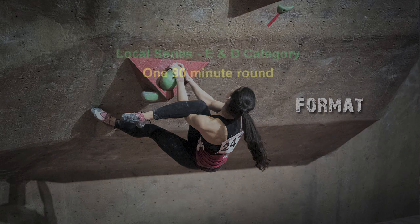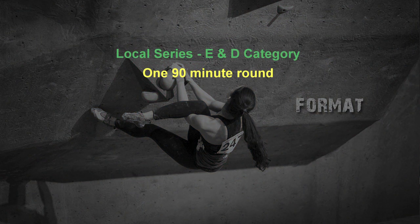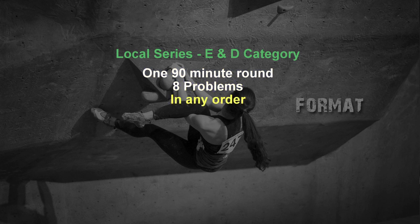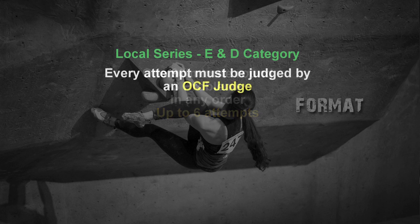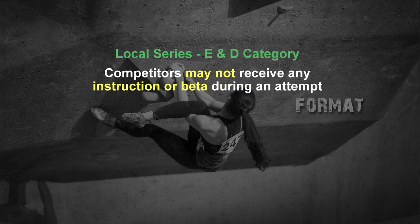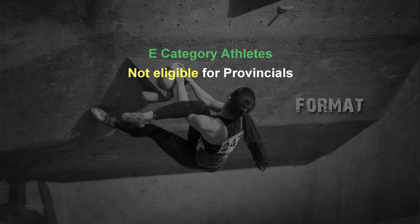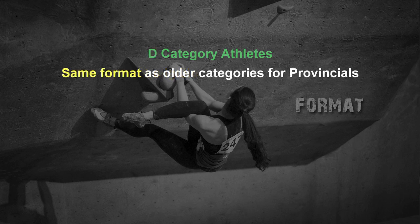Local series competitions for the E and D categories will be one 90-minute round, with eight problems for competitors to try in any order they want. Competitors may try each boulder up to six times, as long as there is enough time. Every attempt must be judged by an OCF judge. Competitors are not allowed to receive instructions, or beta, about a boulder while they are making any attempts. E category athletes are not eligible for bouldering provincials. D athletes will use the same format at bouldering provincials as the older categories.